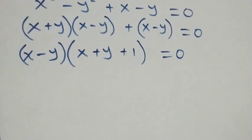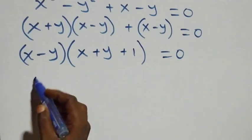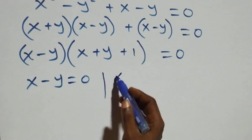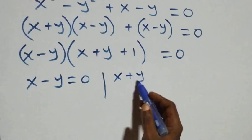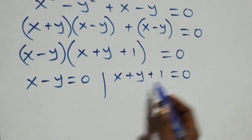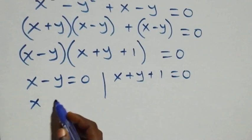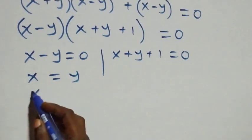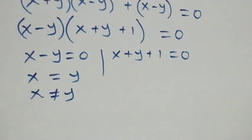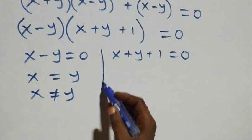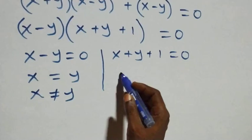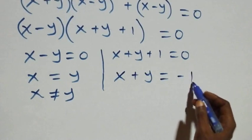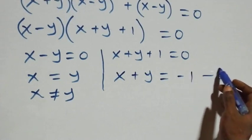From here we have two possible cases: x - y = 0, or x + y + 1 = 0. The first gives x = y, but we have already established that x is not equal to y, so we discard it. From the second case, taking 1 to the other side: x + y = -1. Let's call this equation three.